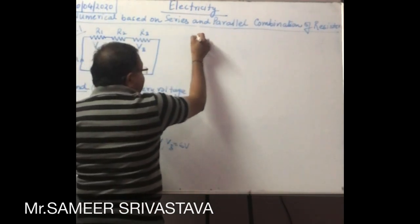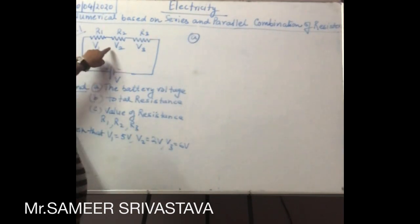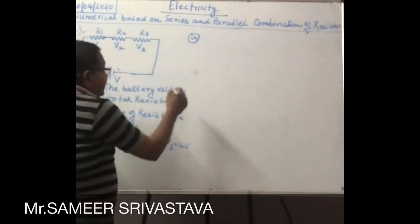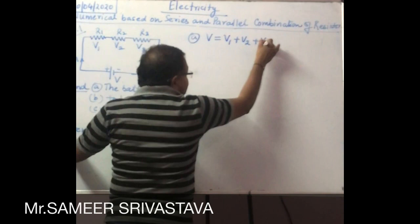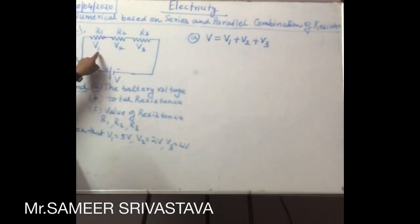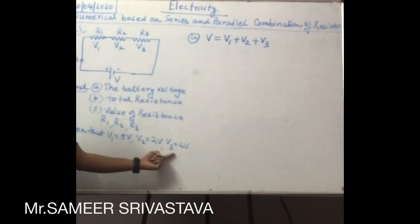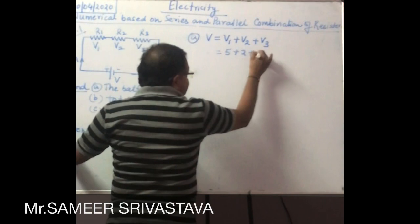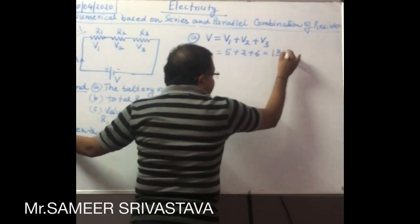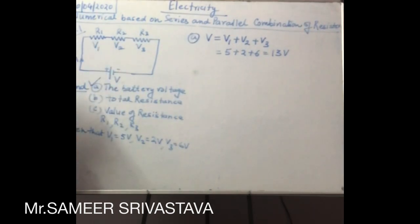For section A, according to my previous lecture, when the resistances are connected in series, the voltage is divided in different parts. From this circuit we can write V is equal to V1 plus V2 plus V3. The values are 5 plus 2 plus 6, the answer is 13 volt. So the battery voltage will be 13 volt.